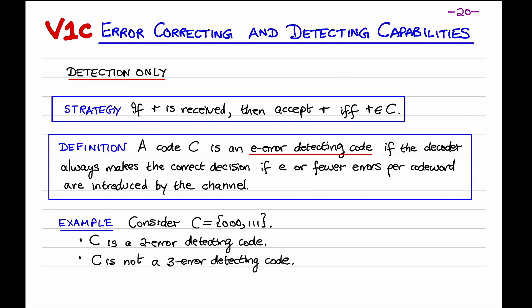On the other hand, C is not a three-error-detecting code. Because if the codeword 000 is transmitted and all three bits are flipped during transmission, then what is received is 111, which is a codeword, and so our decoder will accept 111 as being the transmitted codeword. So the three errors remain undetected. Therefore, C is not a three-error-detecting code.